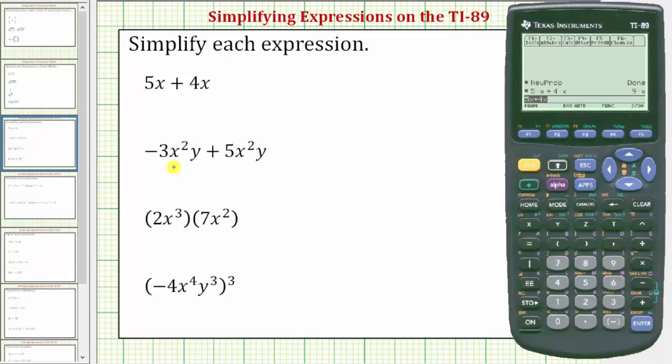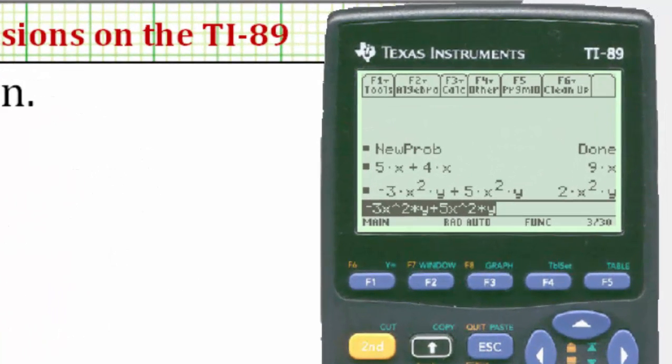Now for the next expression, notice how there are two variables. We'll need to enter multiplication between the different variables. So we'll enter -3x² times y, plus 5x² times y, and enter. The expression simplifies to 2x²y.